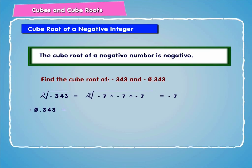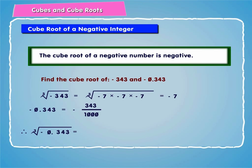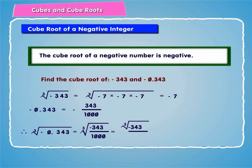Minus 0.343 can be written as minus 343 by 1000. Therefore, the cube root of minus 0.343 is equal to the cube root of minus 343 by 1000, which equals the cube root of minus 343 divided by the cube root of 1000, giving minus 7 by 10, which equals minus 0.7.